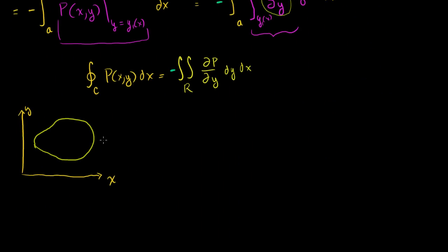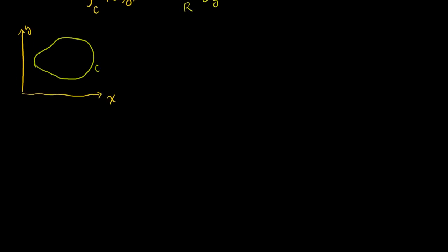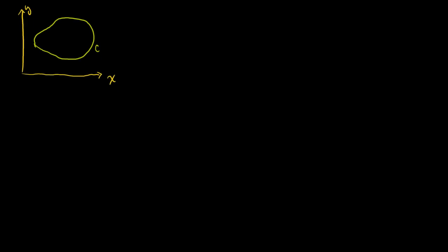Let's say we're dealing with the exact same curve as the last video; we could call that curve C. In the last video, we dealt with a vector field that only had vectors in the i direction. Now let's deal with another vector field that only has vectors in the j direction, or the vertical direction. So let's say the vector field Q of xy is equal to capital Q of xy times j. We're going to concern ourselves with the closed line integral around path C of Q dot dr.